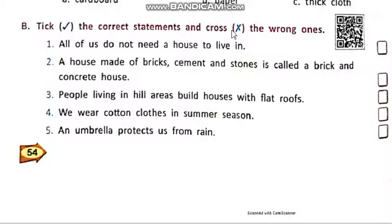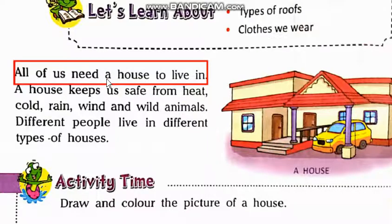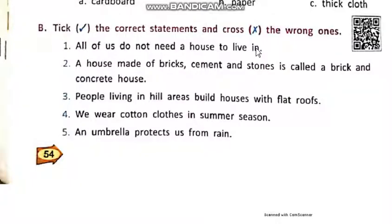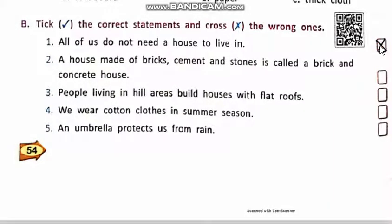B. Tick the correct statements and cross the wrong ones. Number 1: 'All of us do not need a house to live in.' We read that all of us need a house to live in. So this statement is wrong — we write cross in front of it.